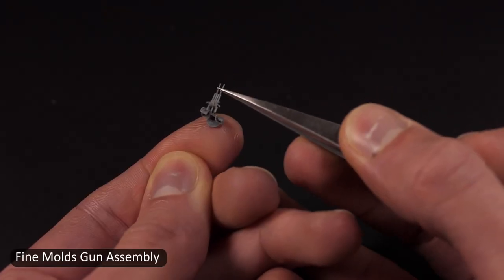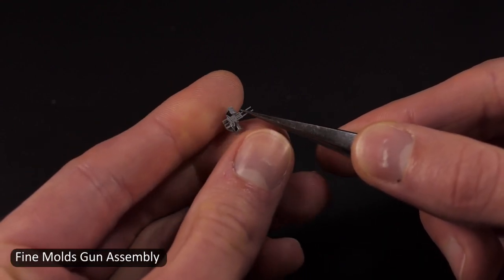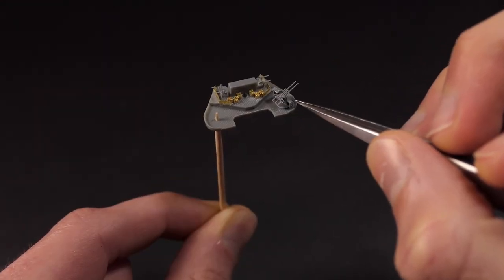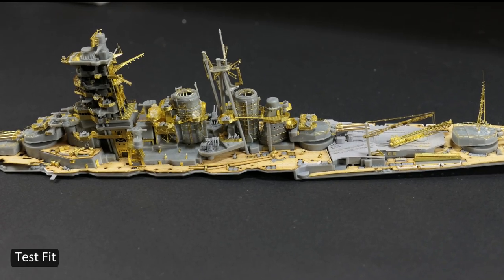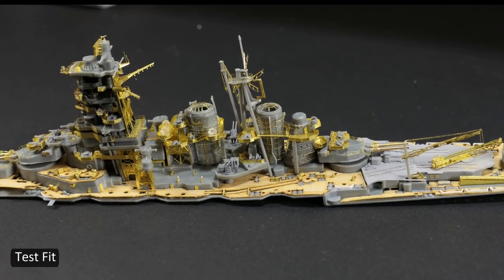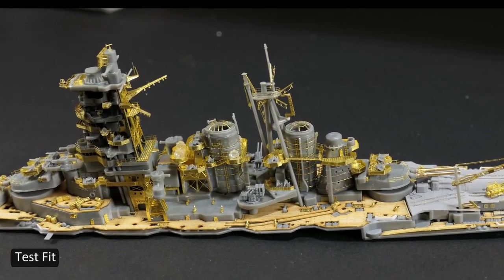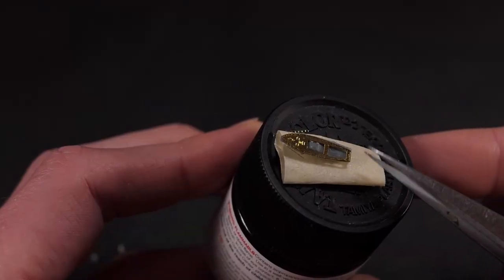With all the detailed photo etch, it didn't look right just using the basic guns that came with the kit, so I replaced them with some highly detailed plastic guns from Fine Molds that just have extremely thin barrels that look really good at scale.